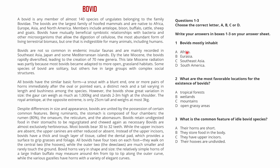What you need to do instead is read the keywords of questions one, two, and three all at once, then dive into the passage together. Question one has 'inhabit,' question two has 'locations,' and question three has 'common feature.' Take these three words in mind — inhabit, locations, common feature — and search for all of them in the passage simultaneously.